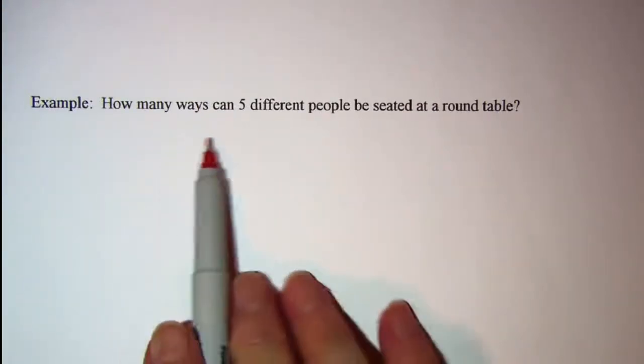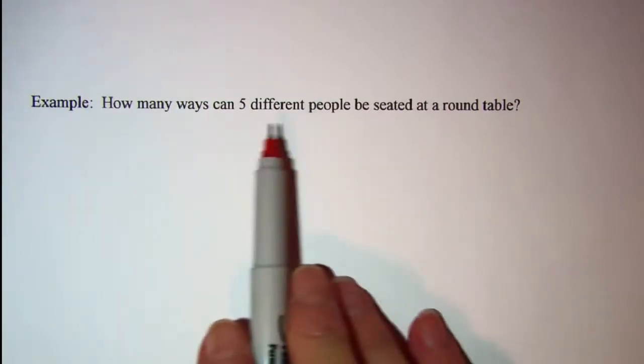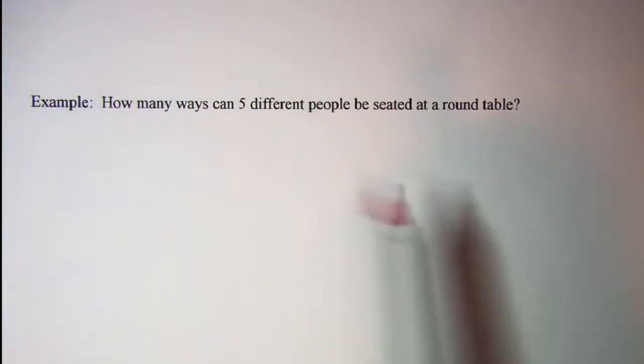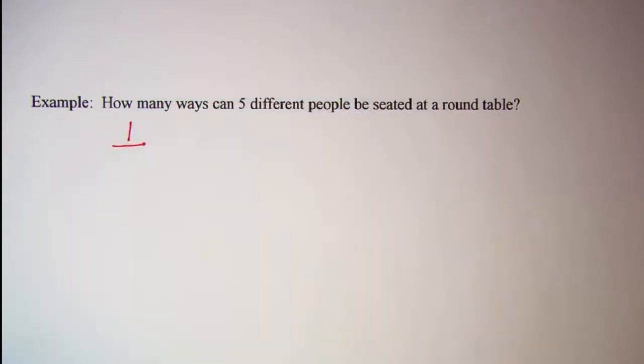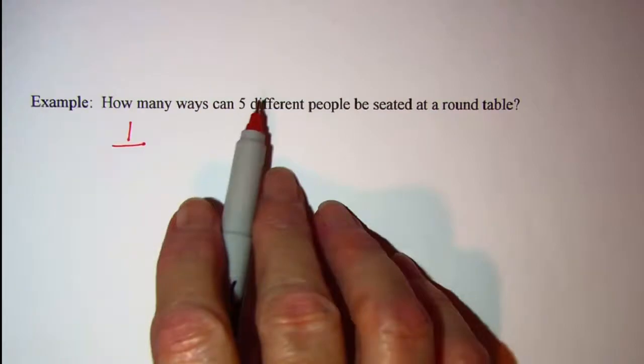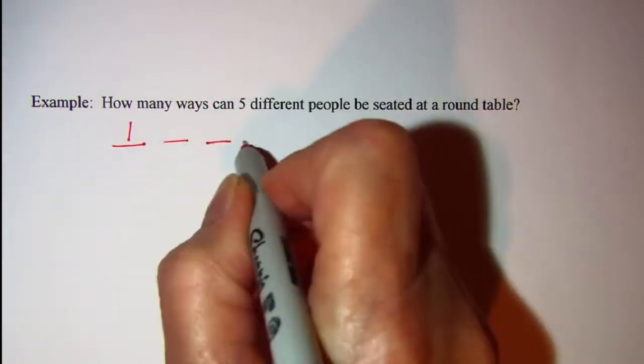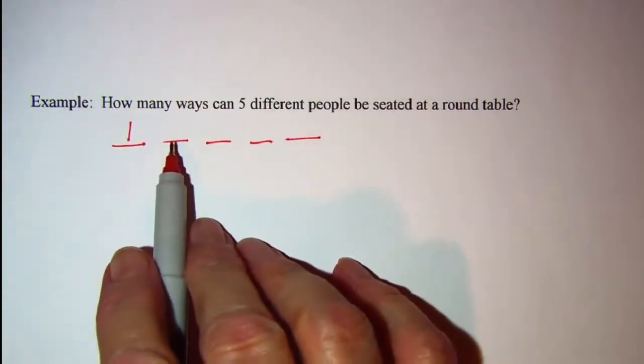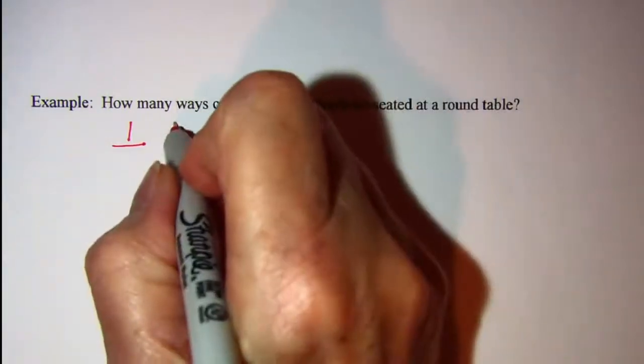How many ways can five different people be seated at a round table? So we're going to take one of those people and sit them down at the table. And there's just one way to do that. And then we have four people left. And we can do that with a linear permutation. So we have four ways to seat the next person.